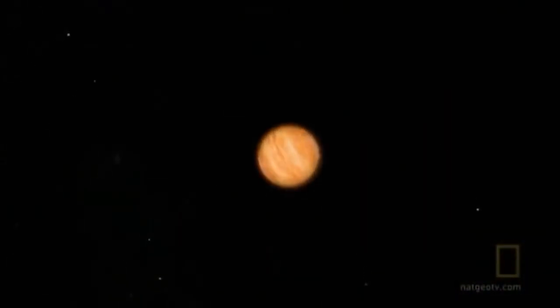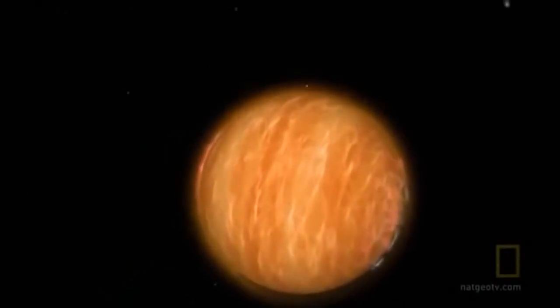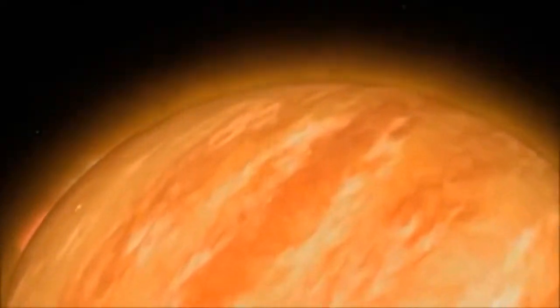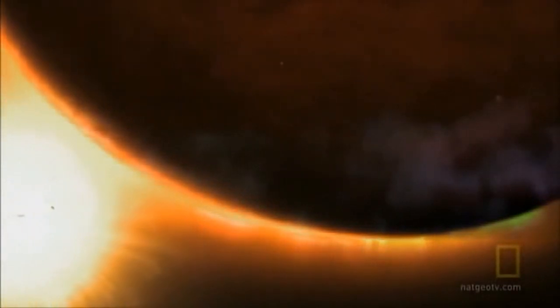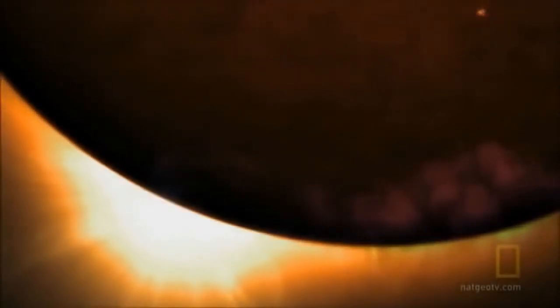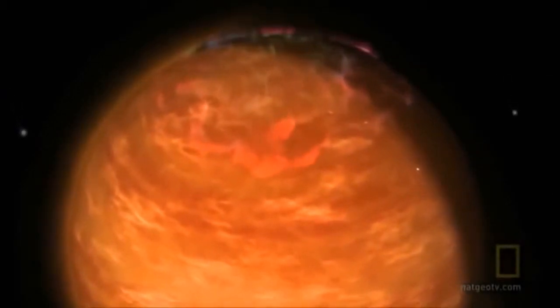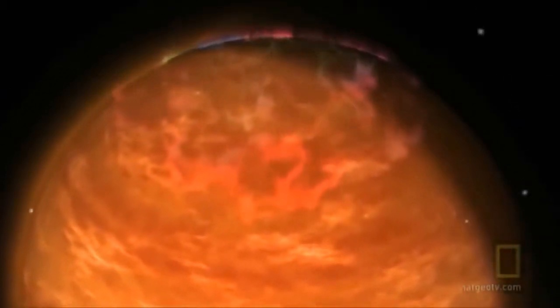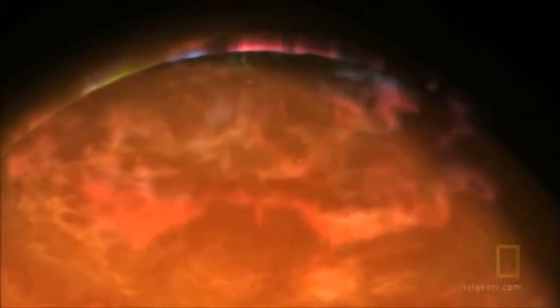Officially called 51 Pegasi B, the planet is nicknamed Bellerophon in honor of the Greek hero who tamed the winged horse, Pegasus. It is a planet that breaks all the rules. Bellerophon roasts in the blazing starlight at temperatures of roughly 1,800 degrees Fahrenheit. It is nearly 150 times more massive than Earth and is a gas giant like Jupiter.